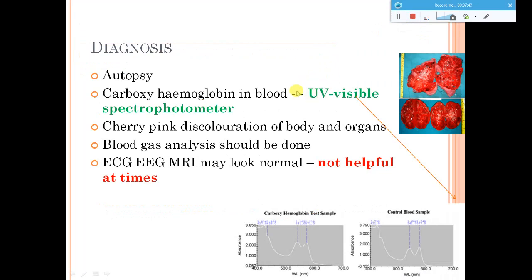Regarding diagnostic methods: these analyses are typically done after death during autopsy to determine the cause. During autopsy, it was found that most of the organs had turned cherry pink — this indicates carboxyhemoglobin accumulating in those organs. Additionally, blood analysis showed a high reading for carboxyhemoglobin.